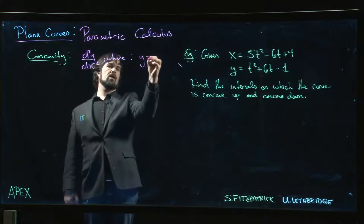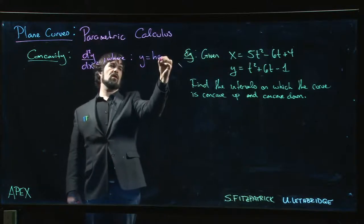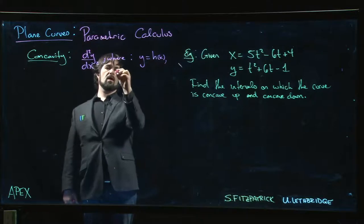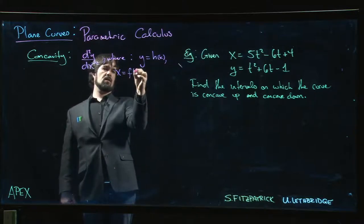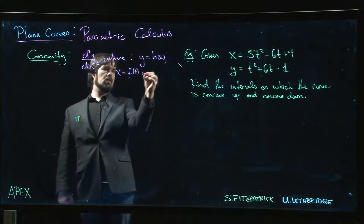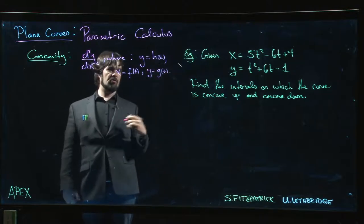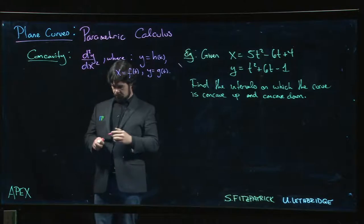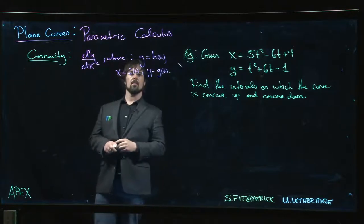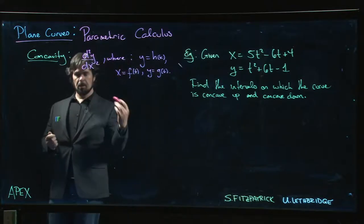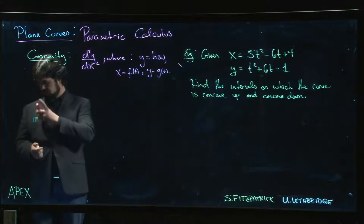y is some function of x, let's call it h of x, where x is say f of t and y is let's say g of t. So we're looking basically for h double prime here.